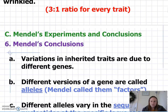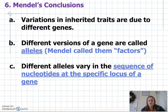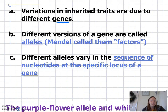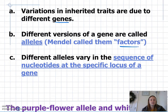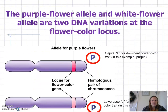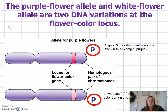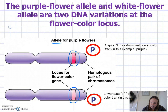What Mendel concluded was that variations are due to different genes — though he didn't know they were called genes at the time and just called them heritable characteristics. Different versions of a gene are called alleles, though Mendel called them factors. The different alleles vary in the sequence of nucleotides at the specific locus of a gene. So what gives you different alleles is those different sequences of nucleotides at the location of the gene coding for that trait. For example, the purple flower allele and the white flower allele are two different versions of flower color, located at the same place on homologous pairs of chromosomes.